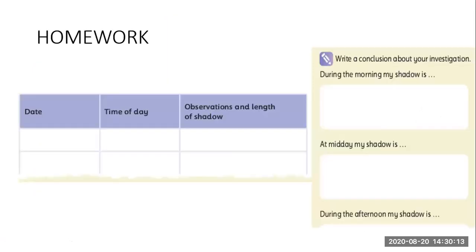Please do an observation about this. You will measure your own shadow in the morning, at midday at 12 o'clock, and in the afternoon. Measure each time and tell me the results in the next lesson — this is your homework.